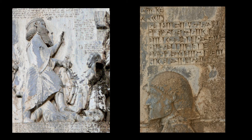Sections 65–67: "King Darius says: You who shall hereafter see this tablet which I have written, or these sculptures, do not destroy them, but preserve them so long as you live. If you shall behold this inscription or these sculptures and shall not destroy them, but shall preserve them as long as your line endures, then may Ahura Mazda be your friend, and may your family be numerous; live long, and may Ahura Mazda make fortunate whatsoever you do. If you shall behold this inscription or these sculptures and shall destroy them and shall not preserve them, may Ahura Mazda slay you; may your family come to naught, and may Ahura Mazda destroy whatever you do."